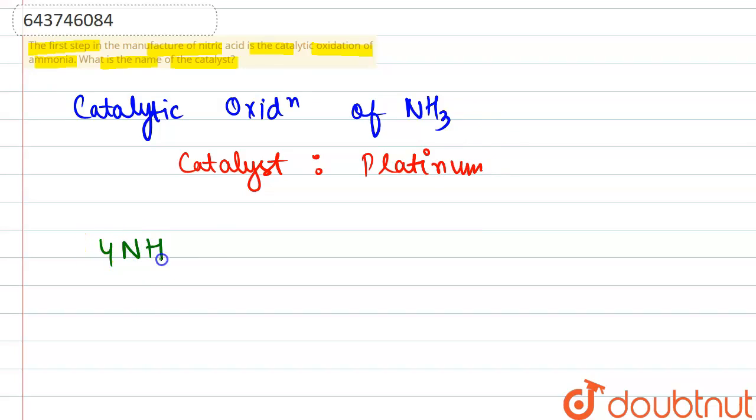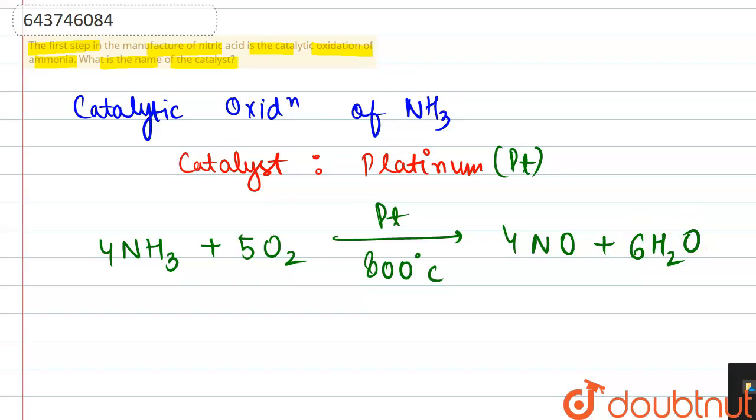Four moles of ammonia reacting with five moles of oxygen in the presence of this catalyst platinum, Pt is the symbol, at the temperature of around 800 degree Celsius, leading to four moles of NO plus six moles of water. And apart from this, there is a liberation of some heat energy also. Okay, so answer is platinum.